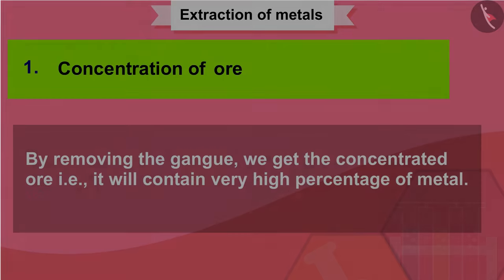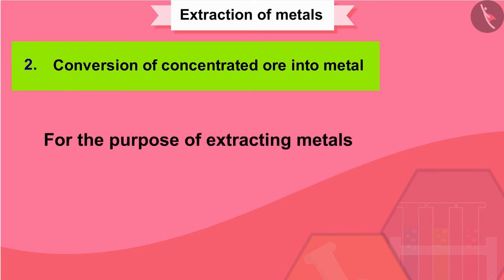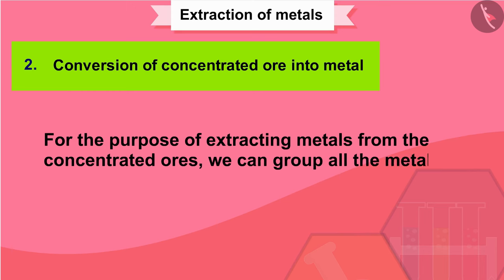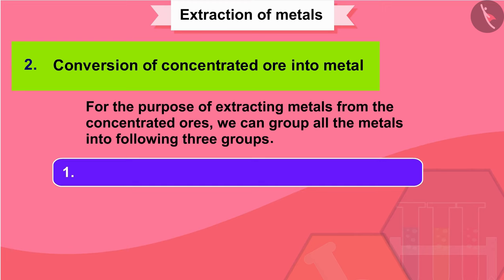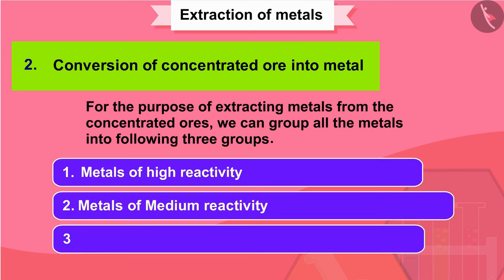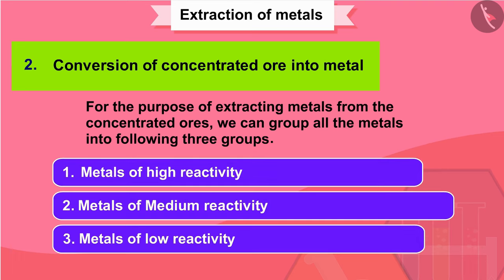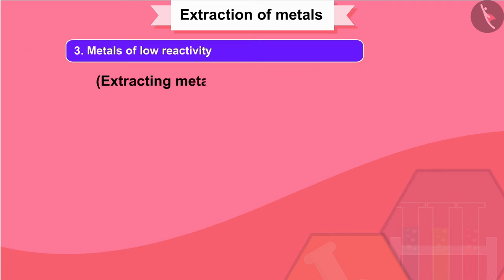Conversion of concentrated ore into metal: for the purpose of extracting metals from the concentrated ores, we can group all the metals into the following three groups — one, metals of high reactivity; two, metals of medium reactivity; three, metals of low reactivity. We will now discuss each of the three categories one by one.